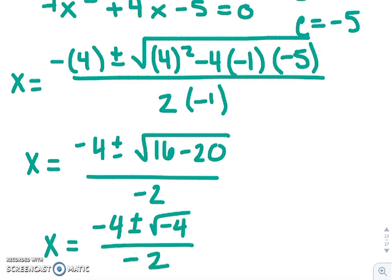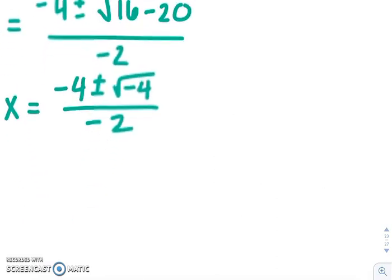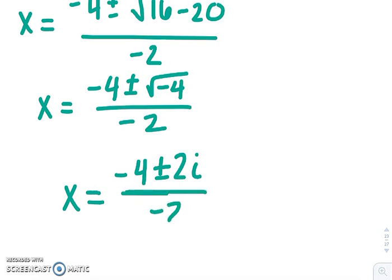So we have to simplify the square root here, the radical. So the square root of that negative is what becomes your imaginary value. So positive or negative i. But the square root of 4 is just 2. So what happens in this case, the root simplifies completely, and we have -4 ± 2i over -2.